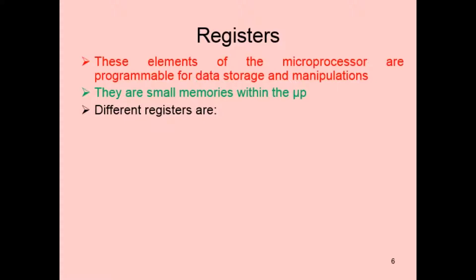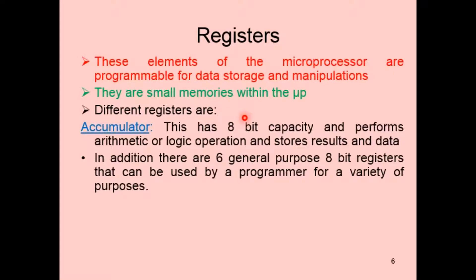Now let us discuss registers. Registers are the data storage and manipulation elements of a microprocessor — very small memories within the microprocessor. The first type is the accumulator, which has a capacity of 8 bits. It performs arithmetic or logical operations and holds the result.